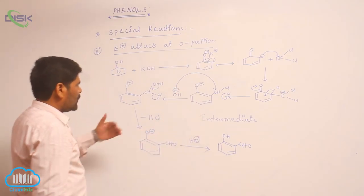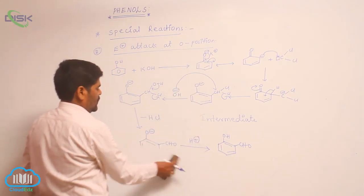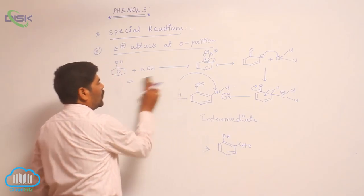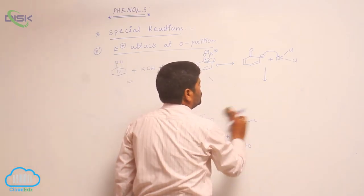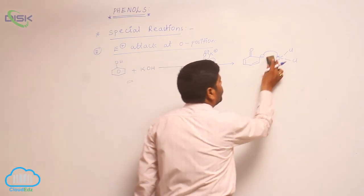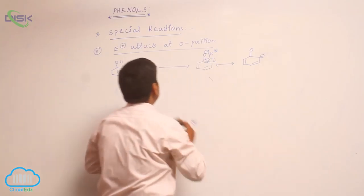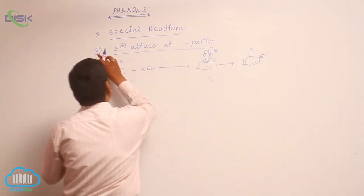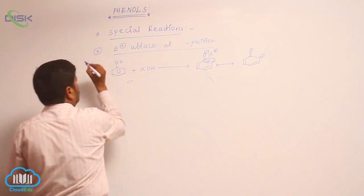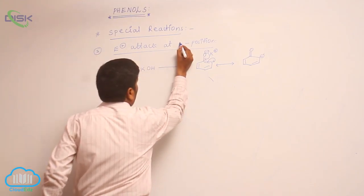Loss of hydrochloric acid occurs to form O minus, then CH–OH. Addition of H plus gives ortho-hydroxybenzaldehyde, which is salicylaldehyde. This completes the electrophile attack at the ortho position. Now, for the attack of the electrophile at the para position...